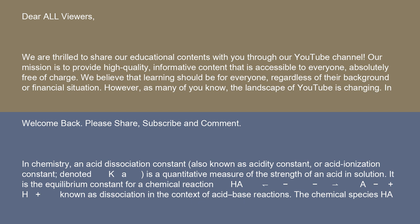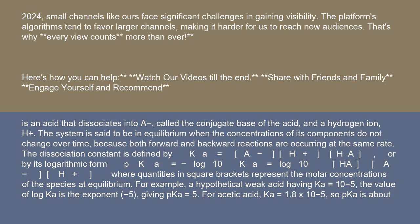HA ↔ A⁻ + H⁺, known as dissociation in the context of acid-base reactions. The chemical species HA is an acid that dissociates into A⁻, called the conjugate base of the acid, and a hydrogen ion, H⁺.